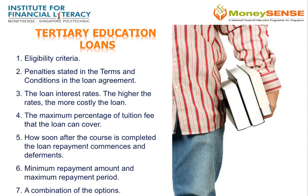When considering tertiary education loans, do consider the eligibility criteria, the penalties stated in the terms and conditions of the loan agreement, and the loan interest rates — the higher the rates, the more costly the loan. Also consider the maximum percentage of tuition fees that the loan can cover, when loan repayment commences (that is, how soon after the course is completed), and any deferment terms. Additionally, consider the minimum repayment amount, the maximum repayment period, and the combination of all the above options.